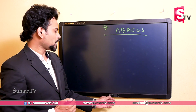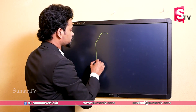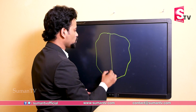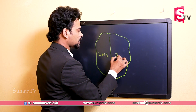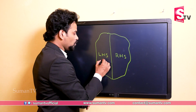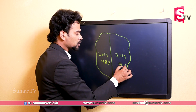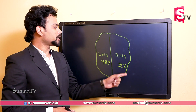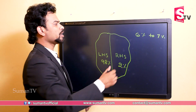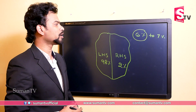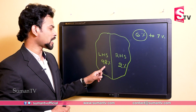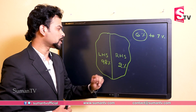Let me show you a picture of the brain. We divide the brain into two parts: the left-hand side and the right-hand side. Generally, the left-hand side brain works 98 percent and the right-hand side brain works only two percent. Out of our total brain capacity, we basically use only six to seven percent — and of that six percent, 98 percent is left brain and only two percent is right brain.